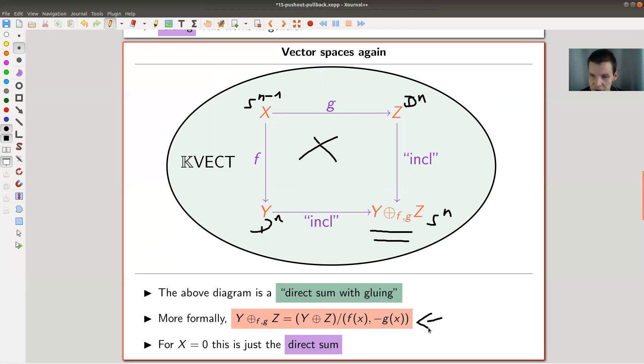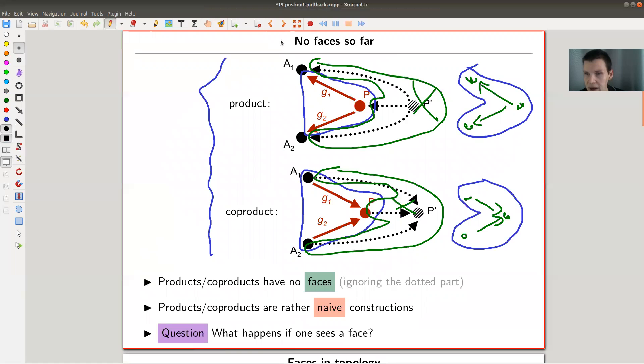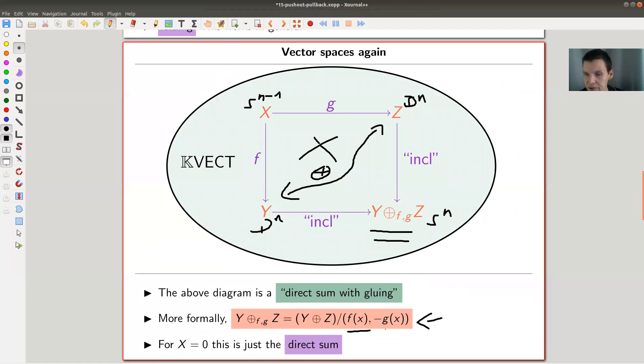It's not quite a direct sum because you would see now here a face, and this face forces it to be a direct sum with gluing. The definition is just what I've written down here. It's a direct sum of X and Z, so just take the direct sum here. But it's not quite the direct sum; that would just be faceless, this picture here. But now we have a face, so you glue them together and you identify certain vectors depending on f and g. For X equals zero, this is just a direct sum because then you kill the face here, but in general it's not. It's this direct sum with a relation.